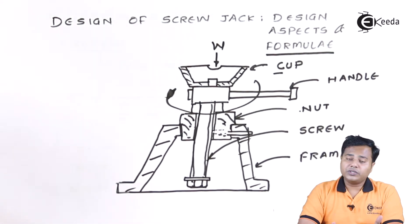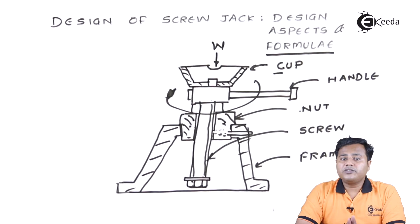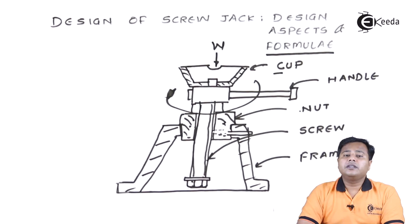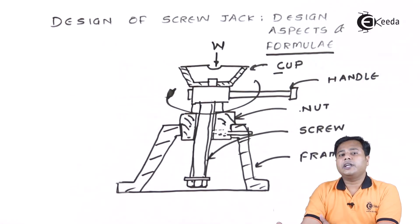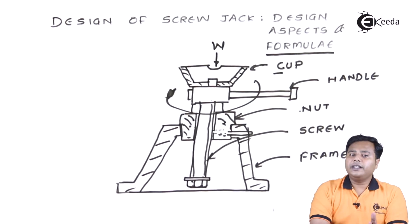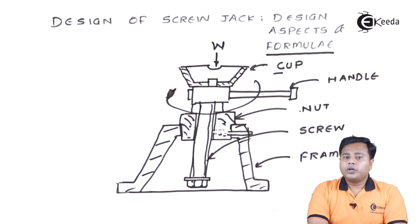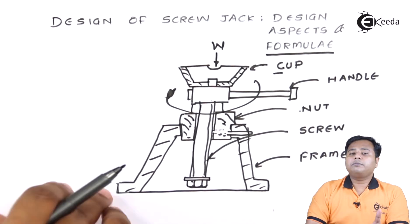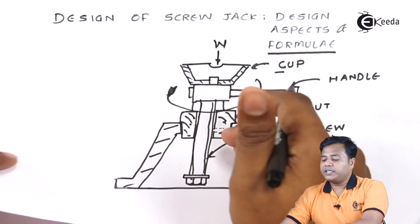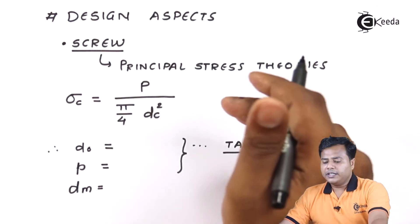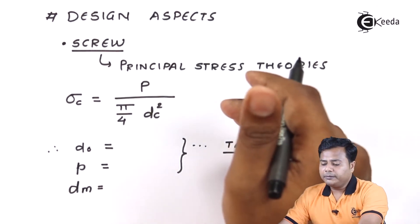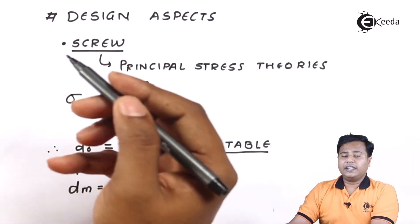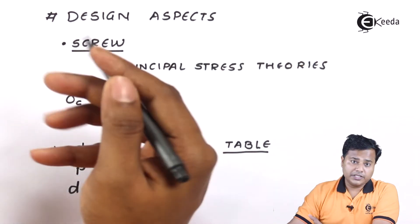Principal stress is the basic parameter that we consider for the design of the screw. That is how the functioning of screw jack is related with the problem statement. So this is the basics of this particular thing — let us move ahead and look at the actual design aspect.